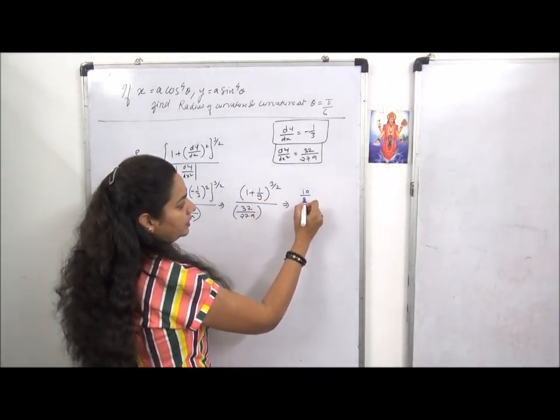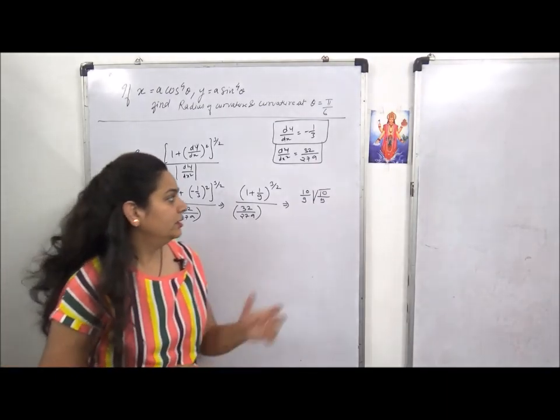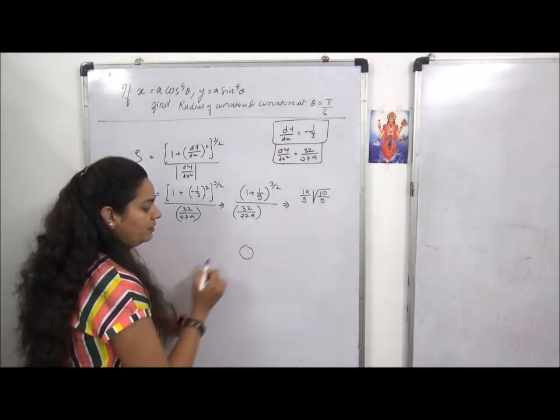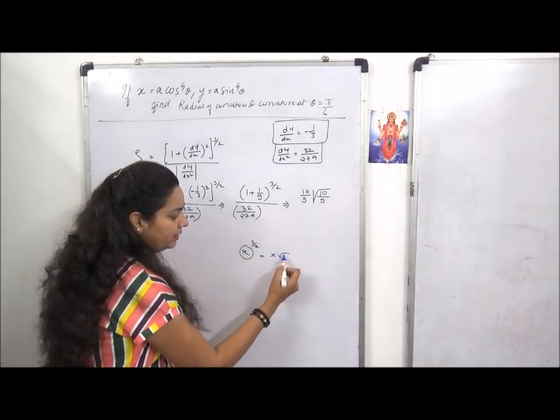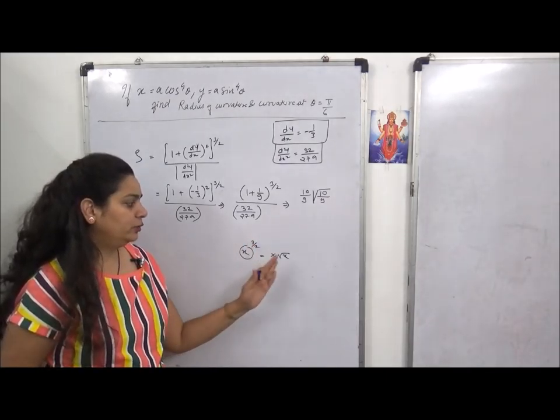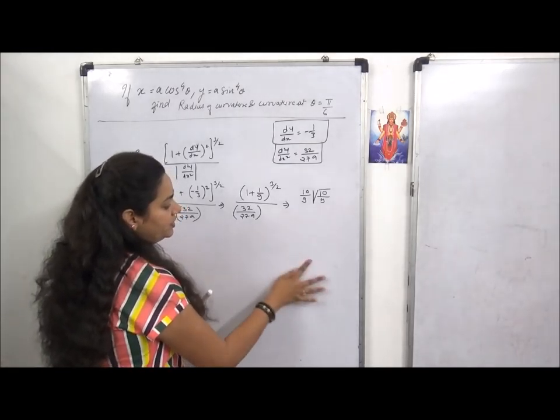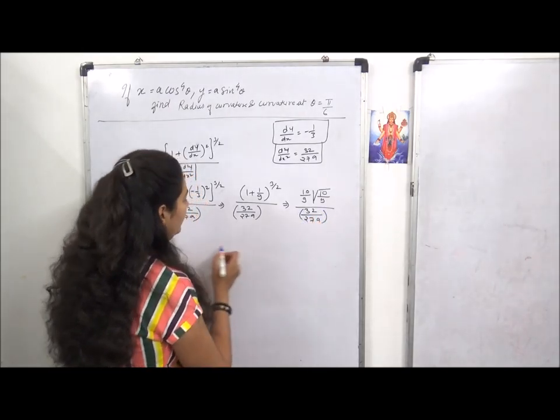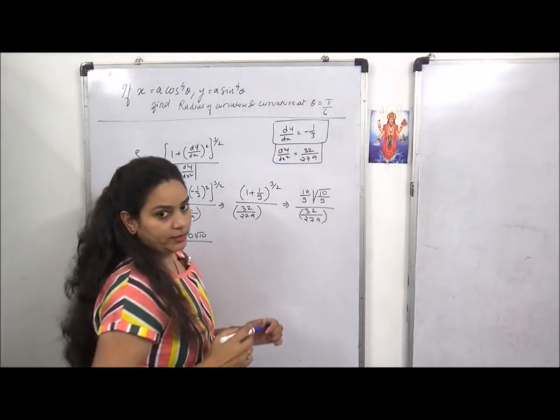Minus times minus is plus. 1 upon 3 squared is 1 upon 9. So the answer is 1 plus 1 by 9, which is 10 by 9, raised to power 3 by 2. I'm showing you complete simplification in full detail. You can also do it directly. But for good marks with step marking, it's better to show all steps. Now 1 by 9 plus 1 equals 10 by 9. Why did I write it as root 10 by 9? Because the power is 3 by 2.